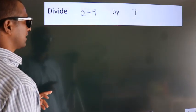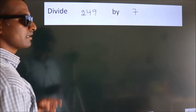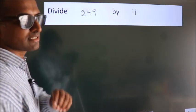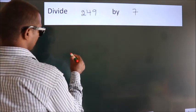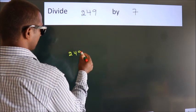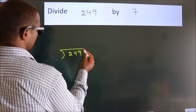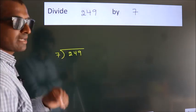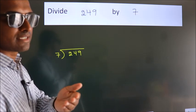Divide 249 by 7. To do this division, we should frame it in this way. 249 here, 7 here. This is your step 1.